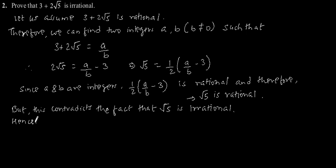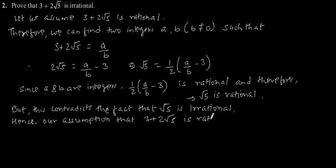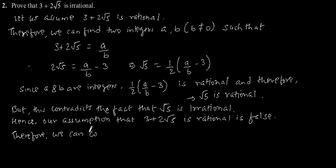Hence, our assumption that 3 plus 2 root 5 is rational is false. Therefore, we can conclude that 3 plus 2 root 5 is irrational.